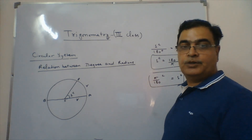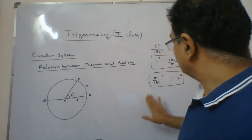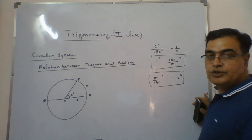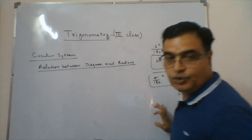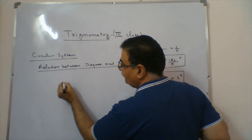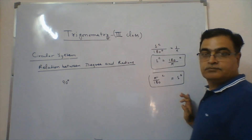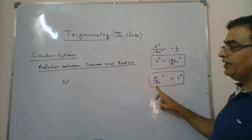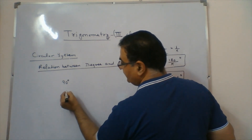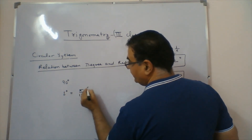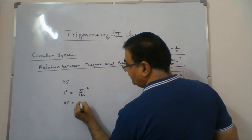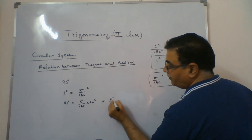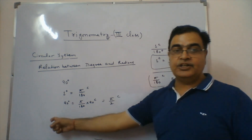Now we use this result to convert angles. If we have 90 degrees and want to convert to radians: since 1 degree equals π/180 radians, we write 90 degrees equals π/180 × 90 radians. Solving, this comes out to π/2 radians. So 90 degrees equals π/2 radians.